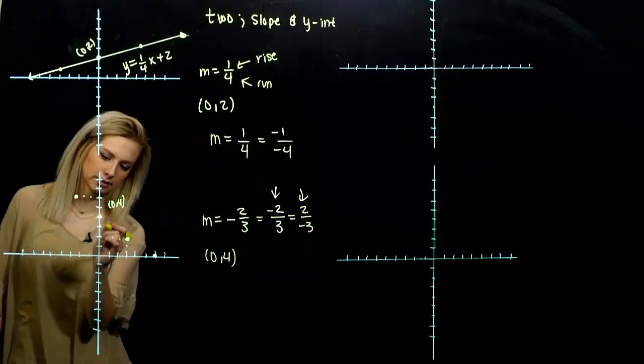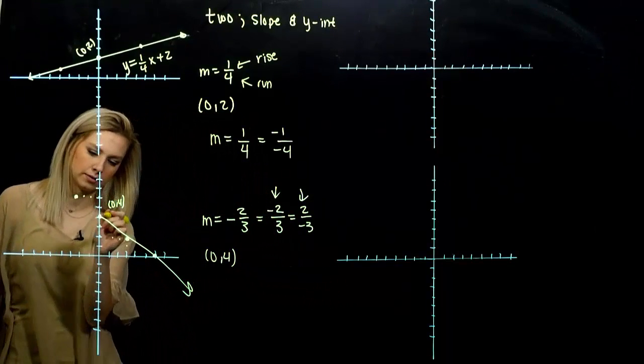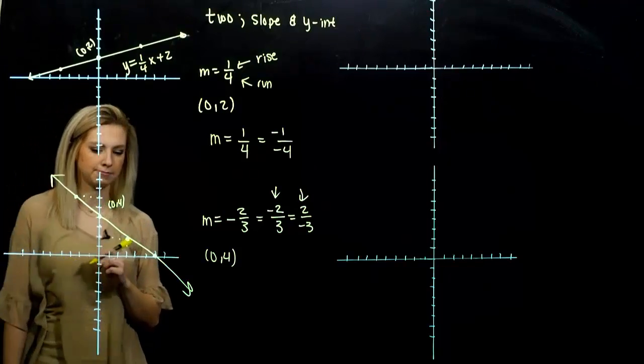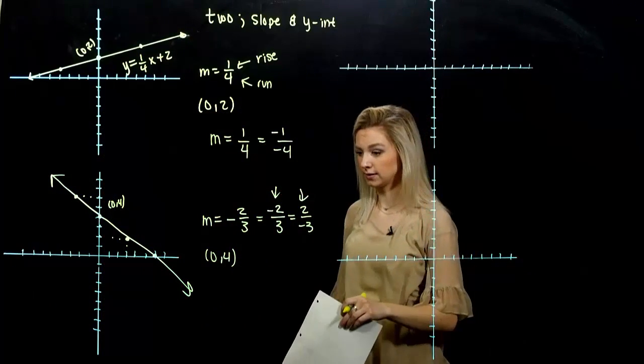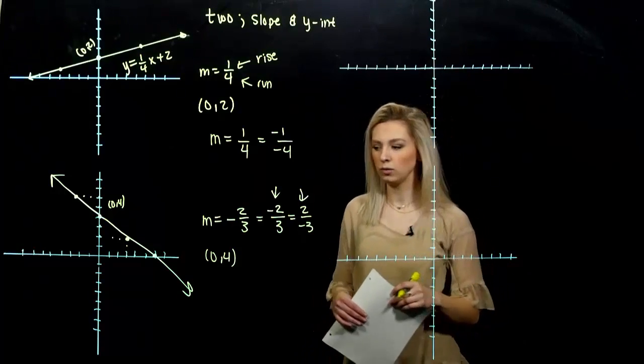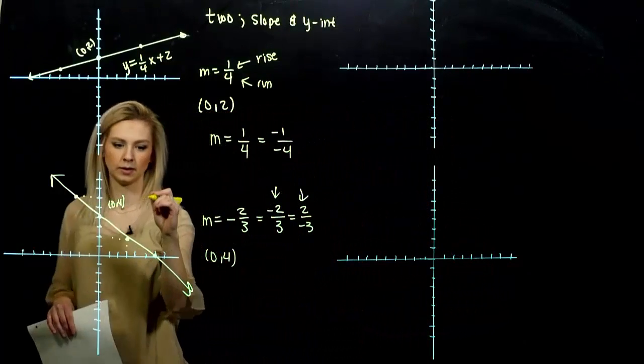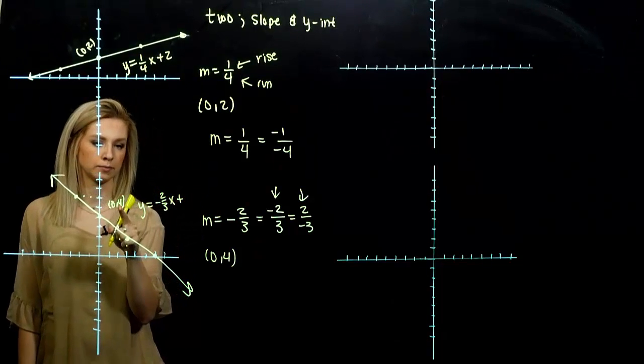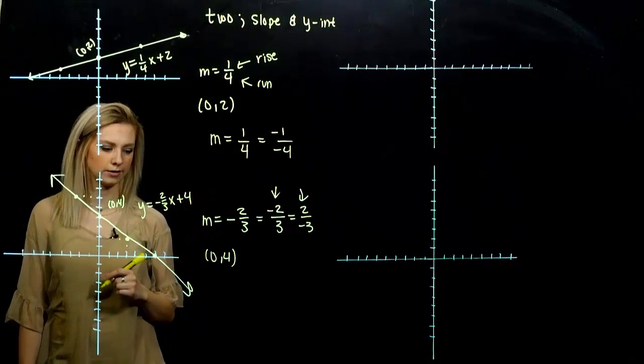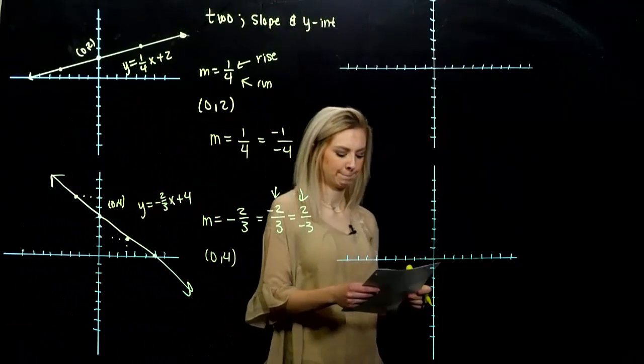Connect the dots. Hopefully you have a straight edge. Yours will be better than mine. It takes too much time. So it's decreasing left to right, like we thought it would, since the slope is negative. And what is the equation of this line? y equals negative two-thirds x plus four. Where's the y-intercept happening at?